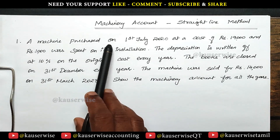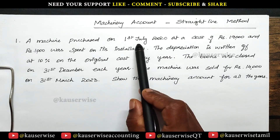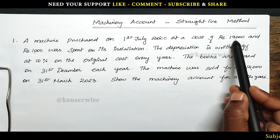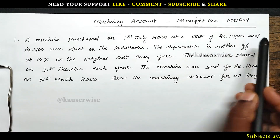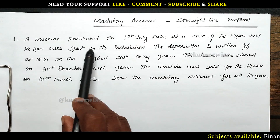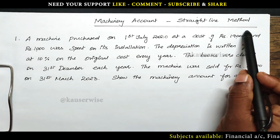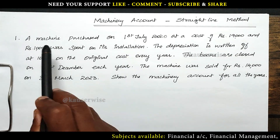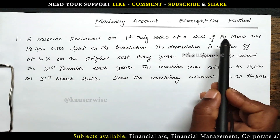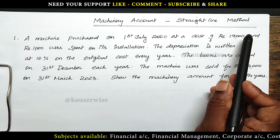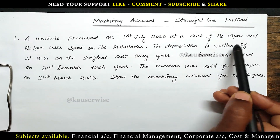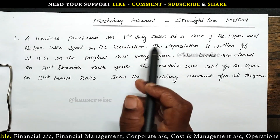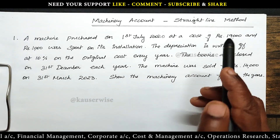A machine was purchased on 1st July 2020 at a cost of rupees 19,000, and 1,000 rupees was spent on its installation. So the installation cost is added along with the cost to find out the total cost of the asset: 19,000 plus 1,000 equals 20,000, which is the actual cost of the asset.